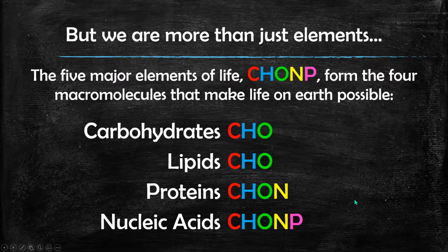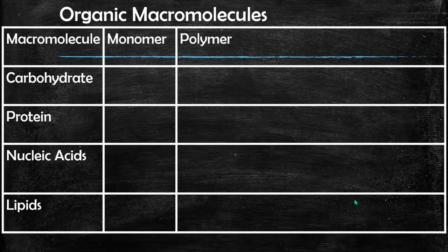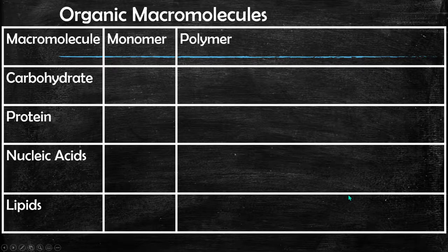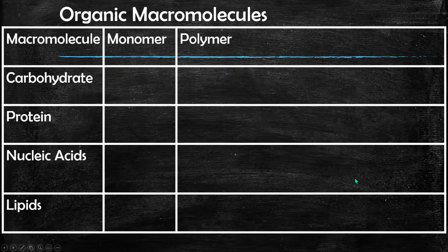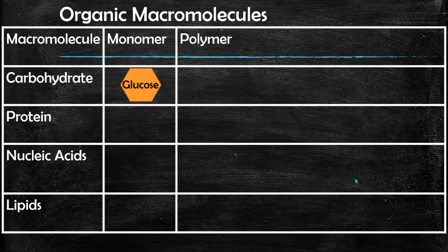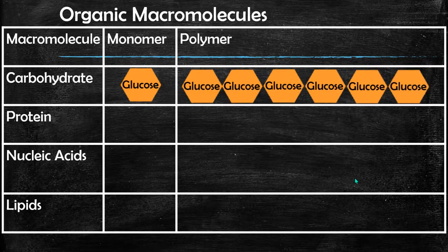These are our four major macromolecules or organic molecules that make up life on Earth. When we look at a summary of how they are formed, we have two major words: monomer and polymer. Monomer means single building block, and polymer is a chain of those — your larger molecule. Carbohydrates' basic building blocks are called monosaccharides, and the example of a monosaccharide is glucose. A chain of monosaccharides is called a polysaccharide.